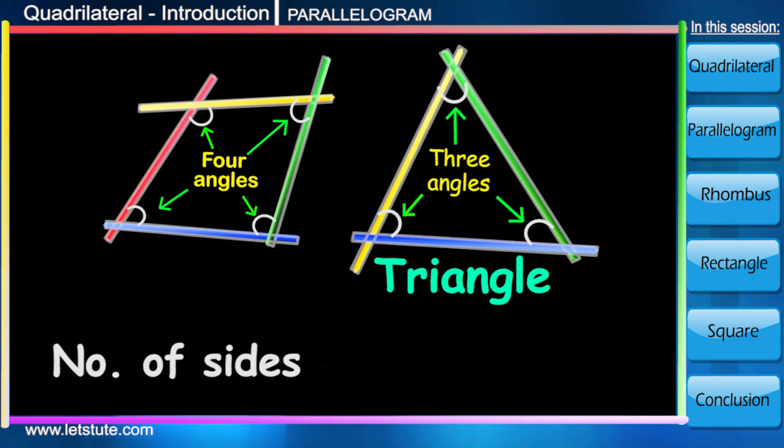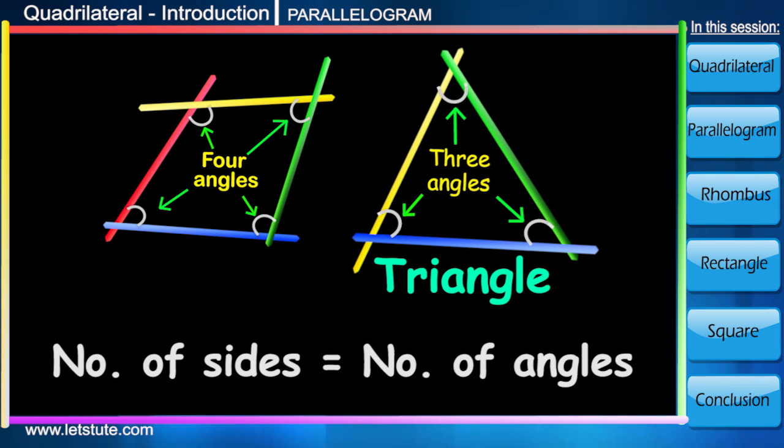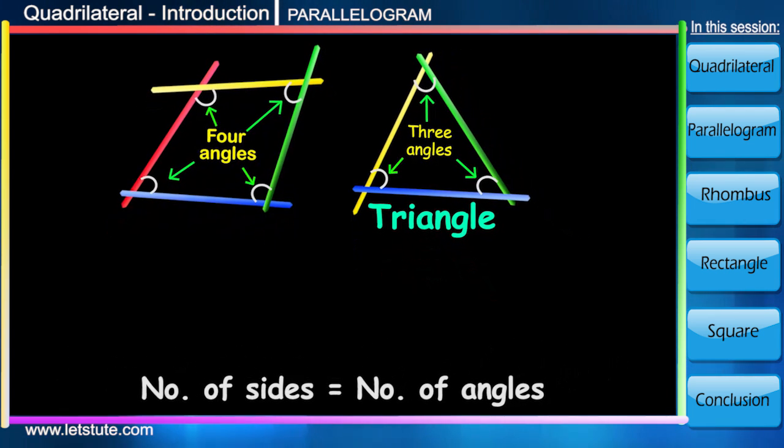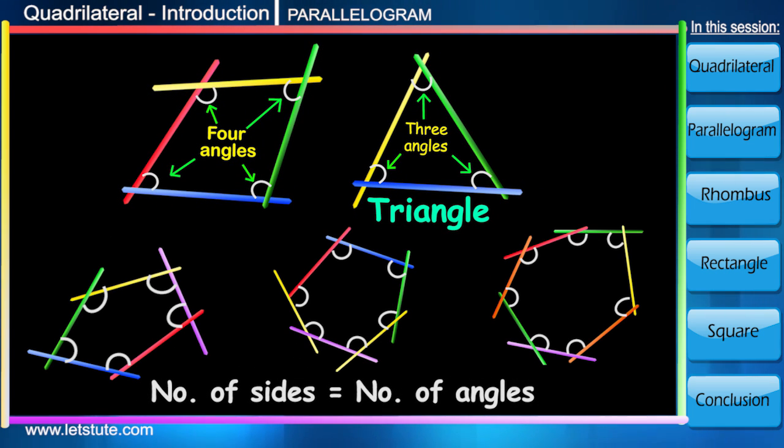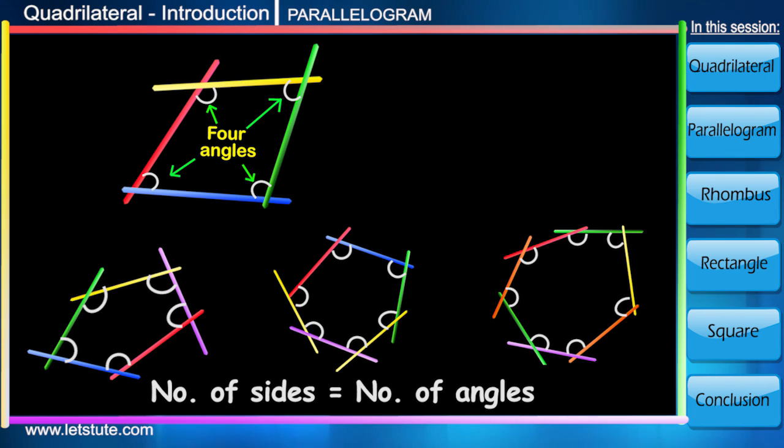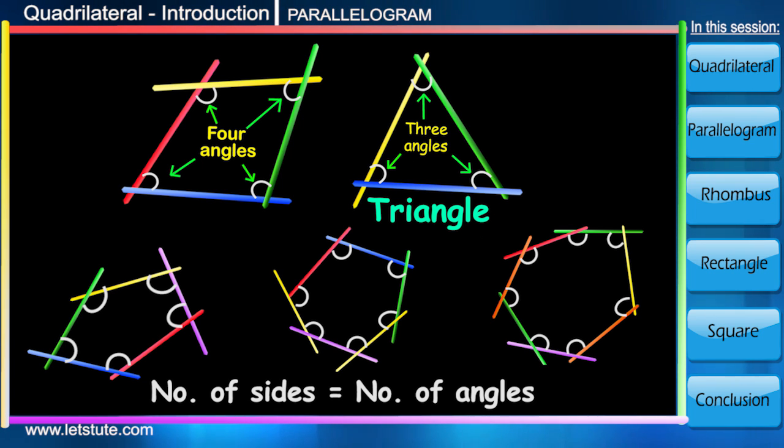Please keep in mind one thing: in closed figures, the number of sides always equals the number of angles. You can try it with any number of sticks—five, six, seven, and so on.